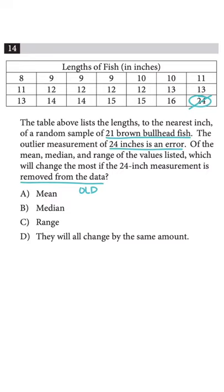It's asking us to figure out which of the following will be most affected: the mean, median, or the range, if that outlier is removed.